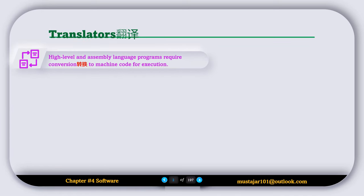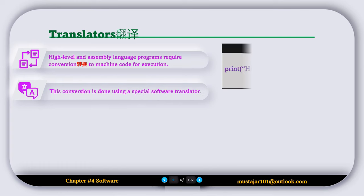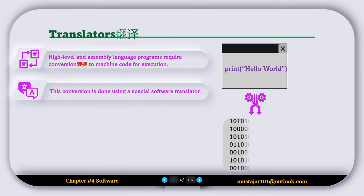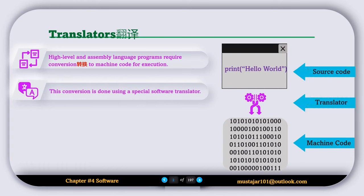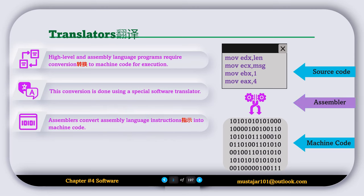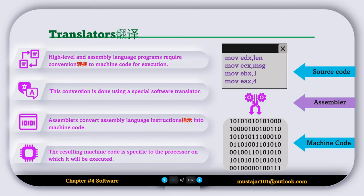High level and assembly language programs require conversion to machine code for execution. This conversion is done using a special software translator. An assembler converts assembly language instructions into machine code. The resulting machine code is specific to the processor on which it will be executed.